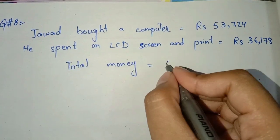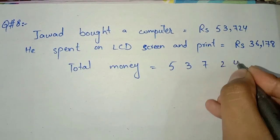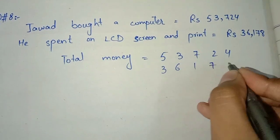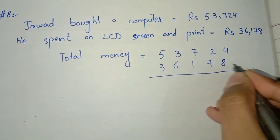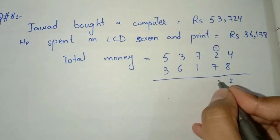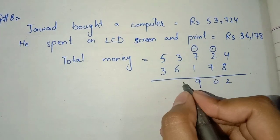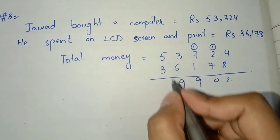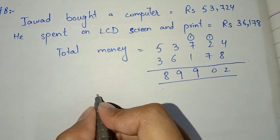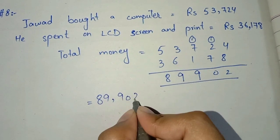In dono ko add kar lenge: 53,724 plus 36,178. Adding column by column: 4+8=12, carry 1; 2+7=9+1=10, carry 1; 7+1=8+1=9; 3+6=9; 5+3=8. To kitni amount lag gayi total — 89,902.